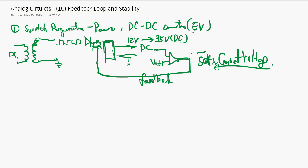This is used right now in EVs — it's a very popular circuit. They have an integrated chip that drives this power FET, and also the comparator is included in this chip. So you can convert any DC into a higher voltage DC using this method.